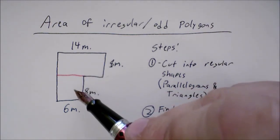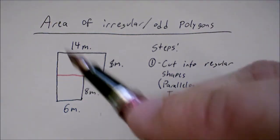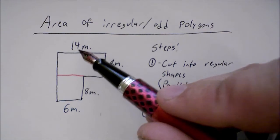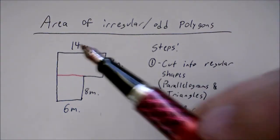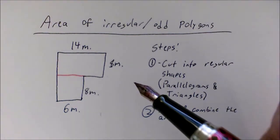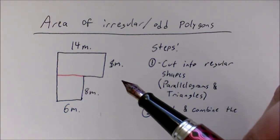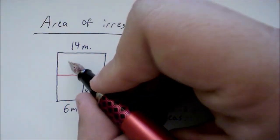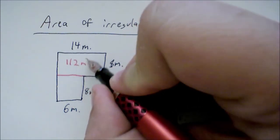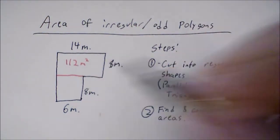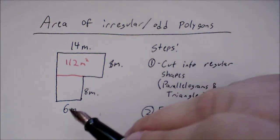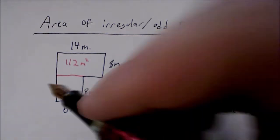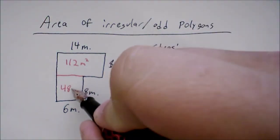And the bottom rectangle. For the top rectangle, we have 14 meters times 8 meters. Since 14 is exactly twice as much as 7, I could simply do 7 times 8, which gives me 56, and I can double it to get 112. For the bottom rectangle, we have 6 meters by 8 meters. 6 times 8 gives me 48 meters squared.